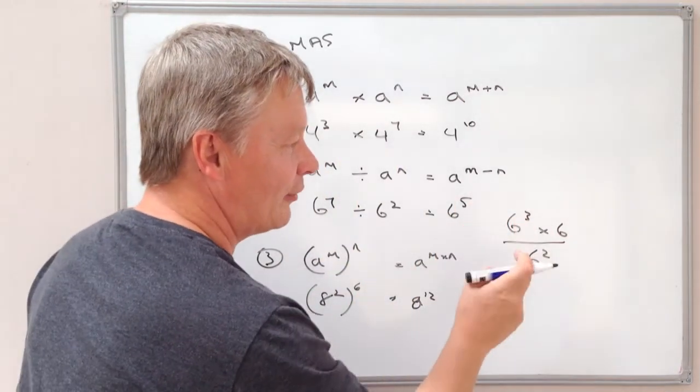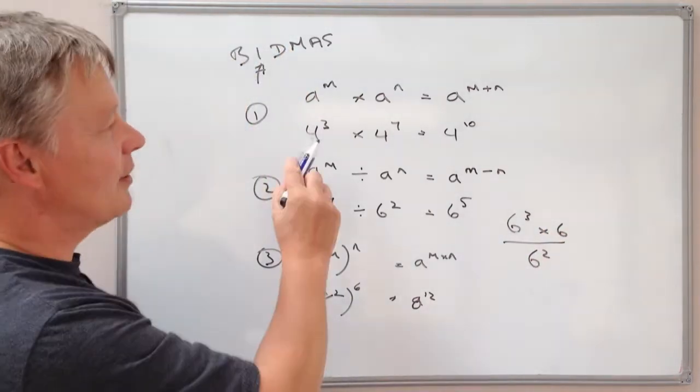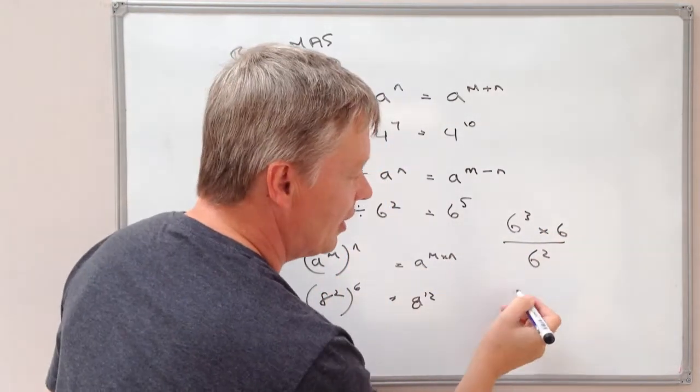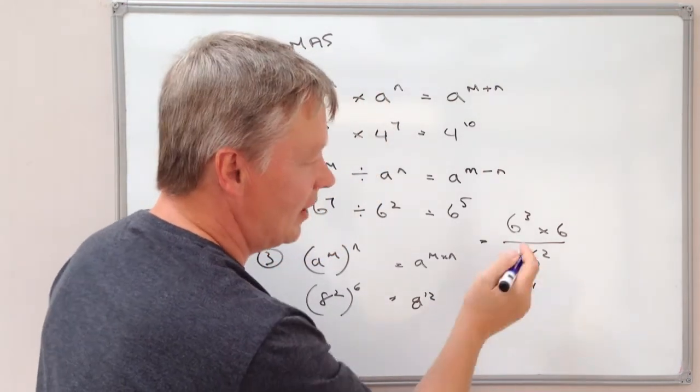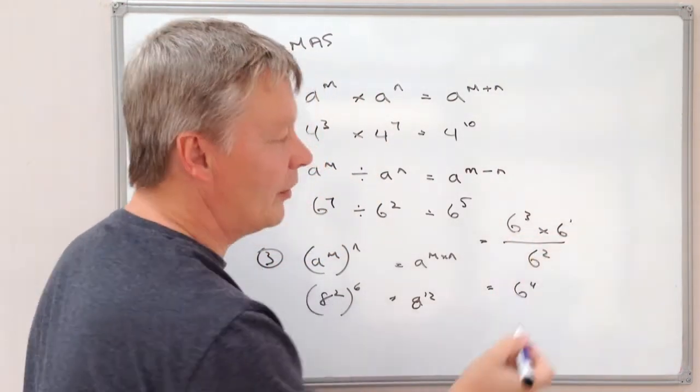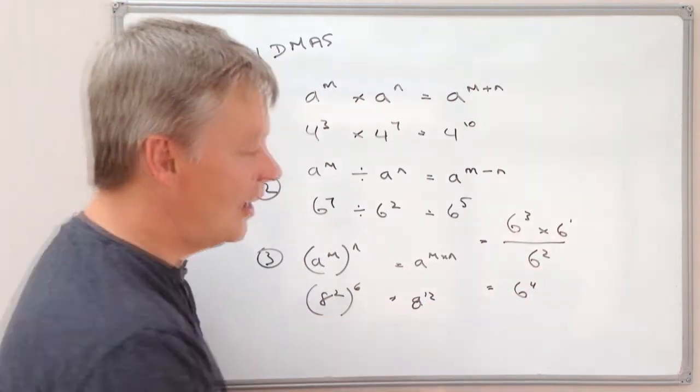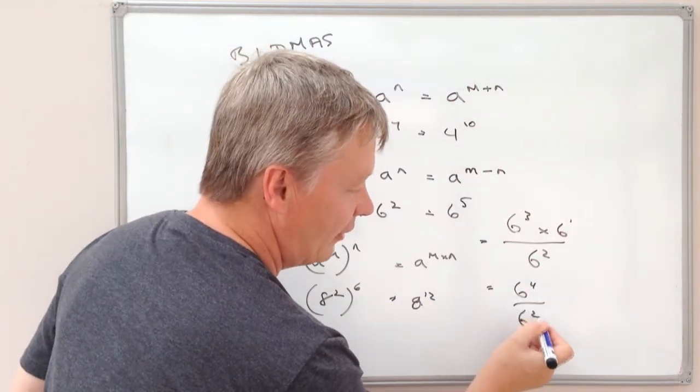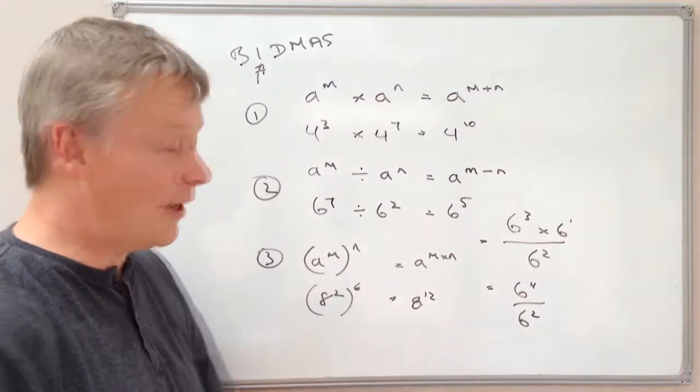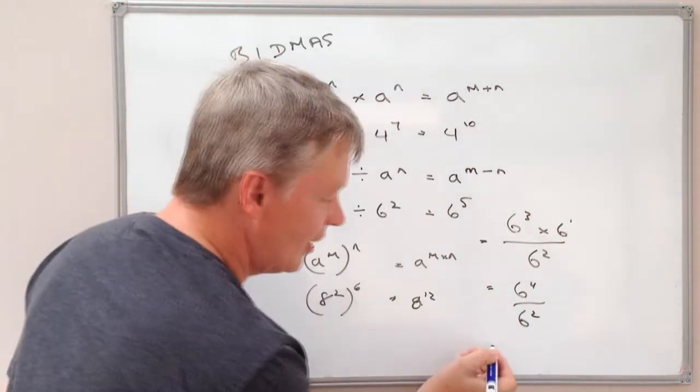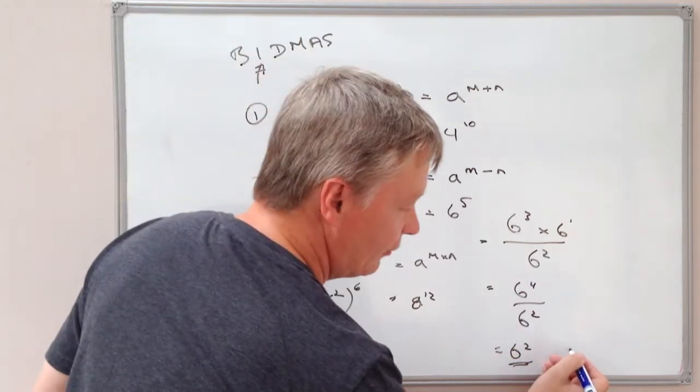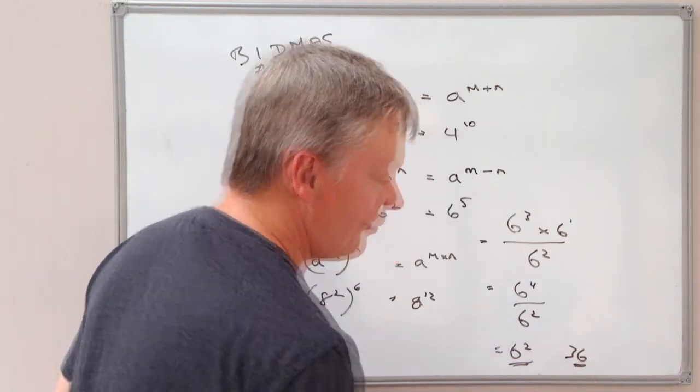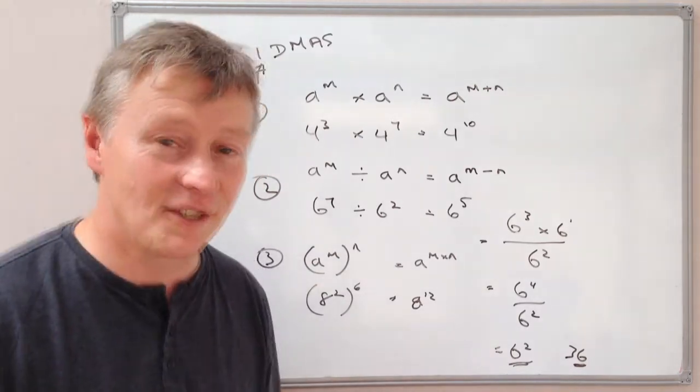So 6 to the power of 3 multiplied by 6 to the power of 1 is going to be the first law, which is 6 to the power of 4, which is 3 plus 1 is 4, and then divided by 6 to the power of 2. Well 6 to the power of 4 divided by 6 to the power of 2, we're using the second law, so that's going to give you 6 squared, and if you prefer you can write that as 6 times 6, which is 36, that will be the answer to that question.